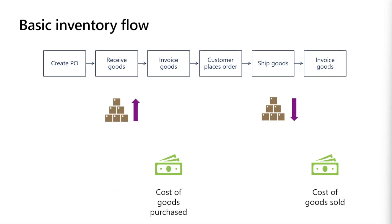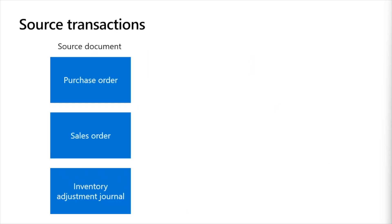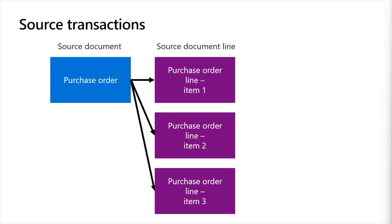Let's break the process down into its core components. When looking at transactions that determine our costs, we use a few key terms. First, source documents are the vehicles for creating and updating transactions processed in the system — for example, purchase orders, sales orders, and inventory adjustment journals. Within a source document, we track one or more source document lines, which track details like item quantity and price. For example, we can have three different lines on a purchase order for three different items. Product dimensions like size, color, style, and configuration always have a separate source document line, while the same line could relate to multiple storage and tracking dimensions.